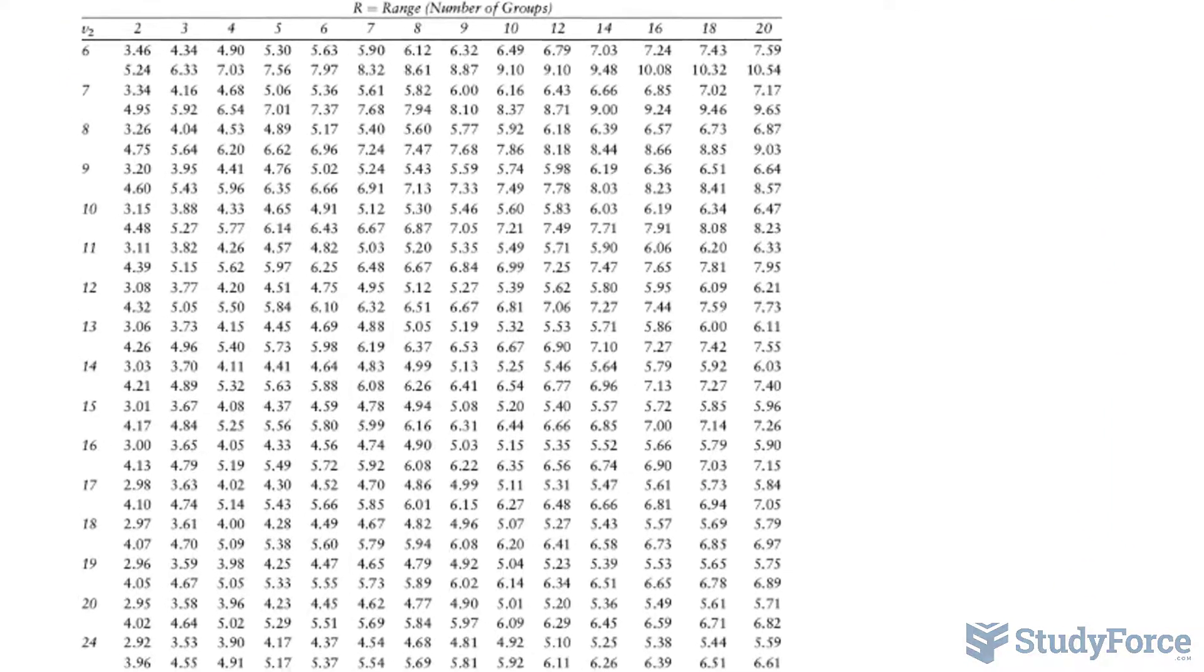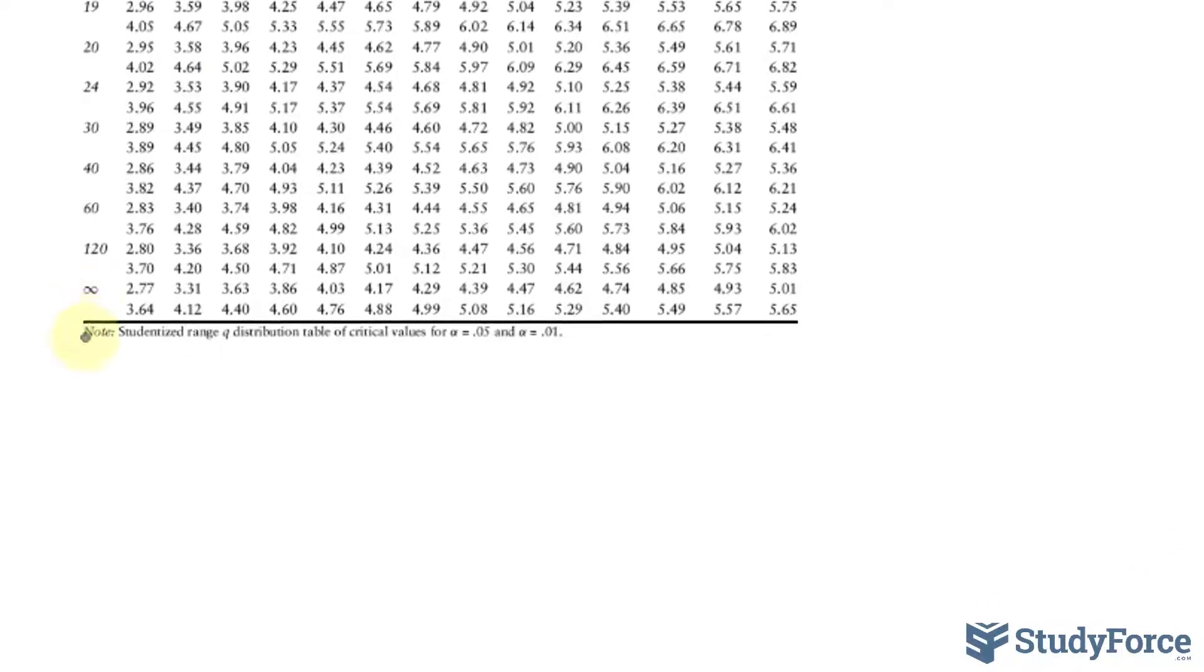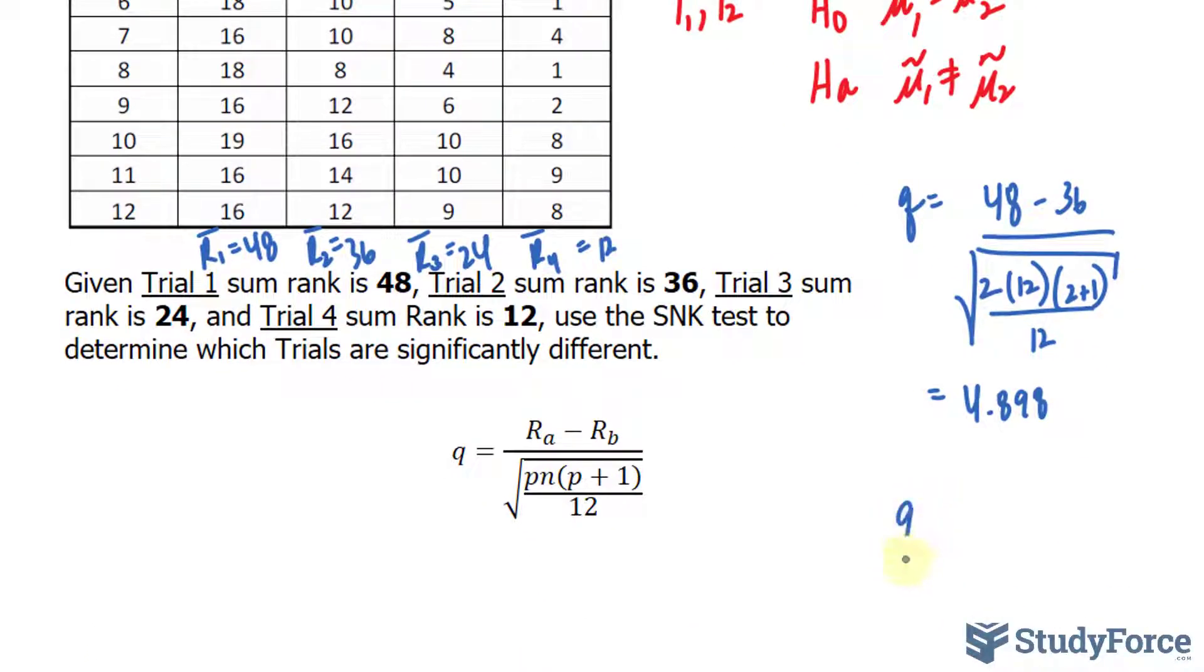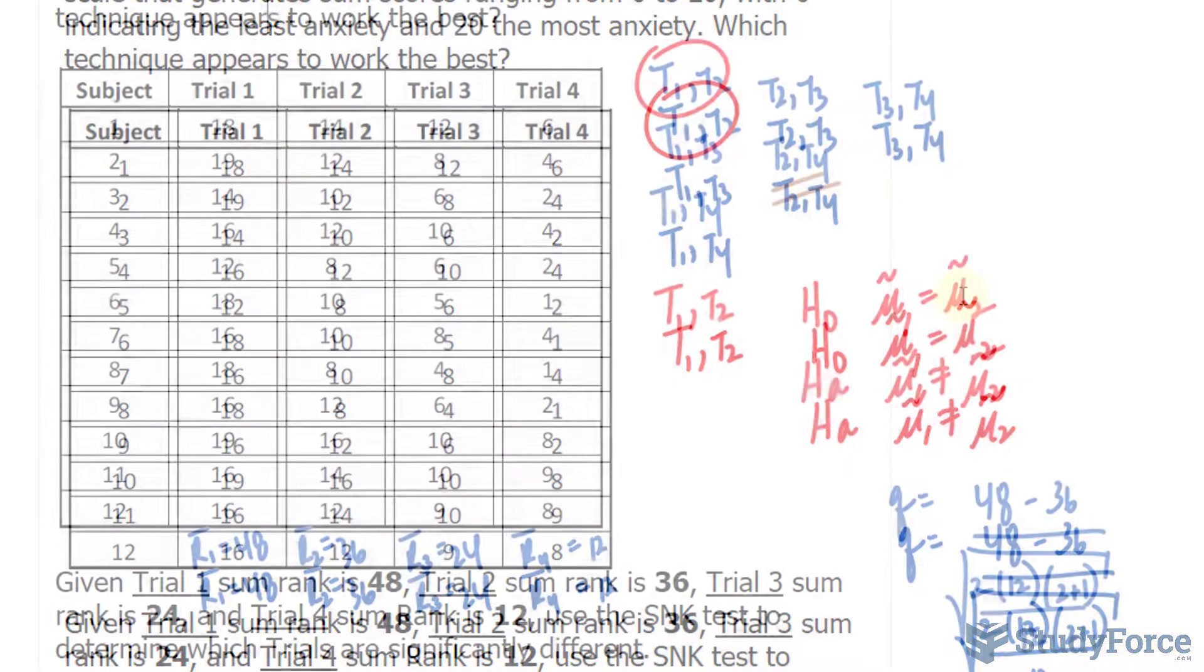Now we have to compare this with the critical Q value. You need a table that looks something like this. Since we're comparing two groups at a time, we'll look at this column, and the degrees of freedom will be infinity, so that's 2.77. Q critical is 2.77. 4.89 is greater than 2.77. This means that we'll be rejecting the null hypothesis in favor of the alternative. Therefore, the medians of trial 1 and trial 2 are statistically different.